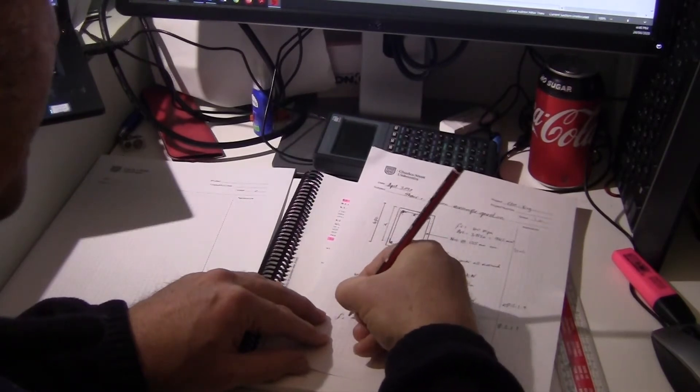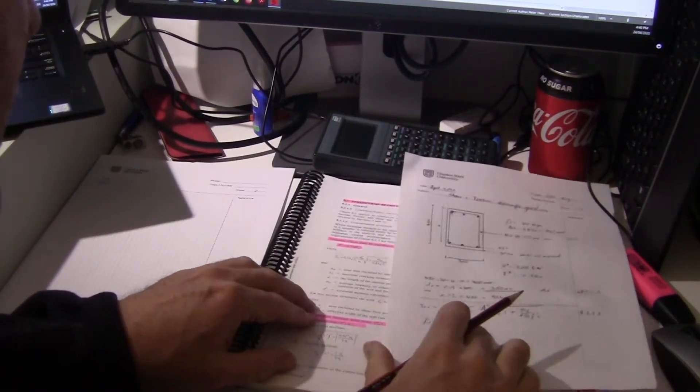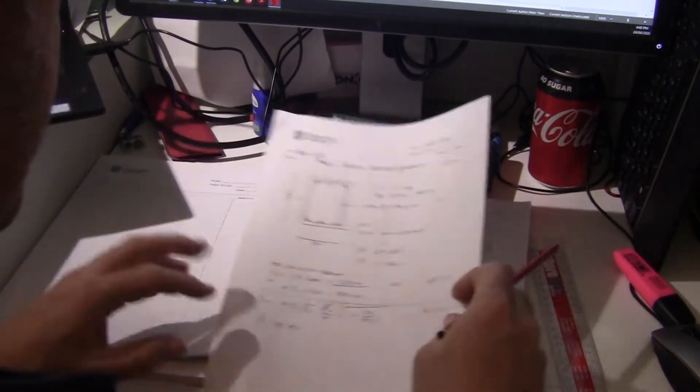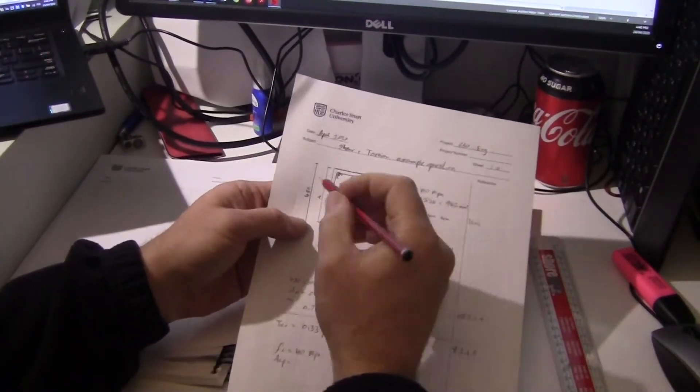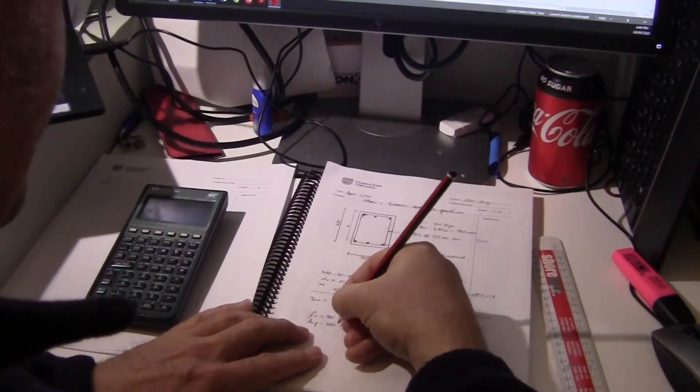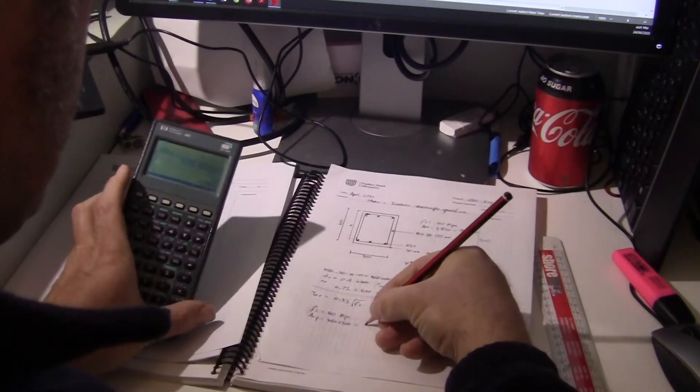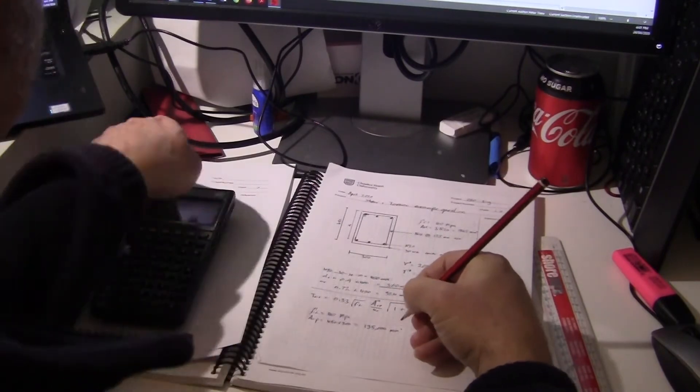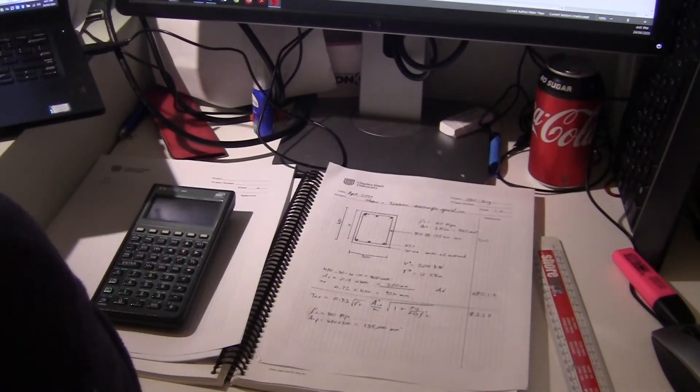First, our f-c is our concrete strength, which we know is 40 mPa. Our a_cp is the total area enclosed by outside perimeter of the concrete section. So it's the area of that, 450 times 300. So I've got that equals 450 times 300 equals 135,000 square millimetres.